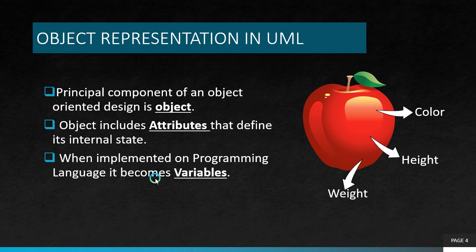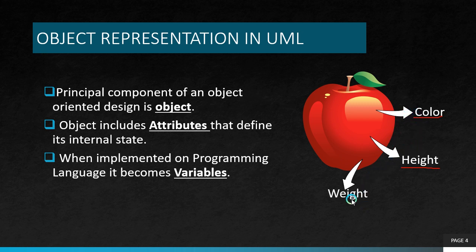First let's look about object. Object is nothing but the principal component of an object oriented design. Consider apple as an object. So here we have object apple and it has color red, height is equal to 7 cm, weight is equal to 100 grams. So there are several attributes. These attributes become variables in programming languages. So the two things we have to remember is we have objects and the objects have attributes.